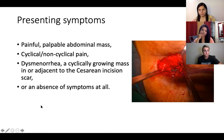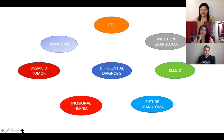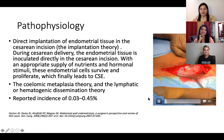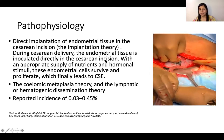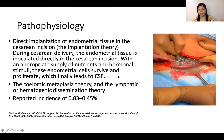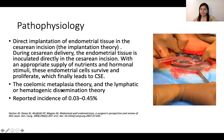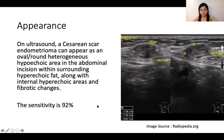Some patients may have just a lump with no other symptoms and may not even recognize it. Abdominal wall endometriosis is commonly misdiagnosed as hematoma, desmoid tumor, incisional hernia, injection granuloma, keloid, or suture granuloma. The pathophysiology involves direct implantation of endometrial tissue during cesarean section — the endometrial tissue is inoculated directly at the edges of the scar and then develops due to blood supply, hormonal stimulus, and nutrients. The coelomic metaplasia theory and lymphatic or hematogenic dissemination theory also support this. The reported incidence is 0.03 to 0.45 percent.